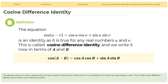Cosine difference identity. The equation cosine(u minus v) equals cosine u times cosine v plus sine u times sine v is an identity, as it is true for any real numbers u and v. This is called the cosine difference identity. We now write it in terms of a and b.